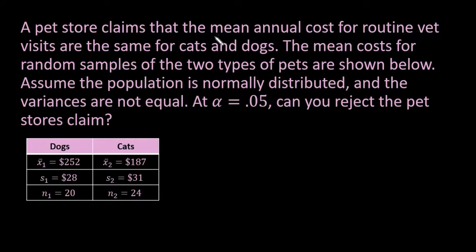A pet store claims that the mean annual cost for routine vet visits are the same for cats and dogs. The mean costs for random samples of the two types of pets are shown in a table. The sample mean for dogs is $252 (x-bar one), the sample standard deviation for dogs is $28, and the sample size is 20. For cats, the mean annual cost was $187 with a sample standard deviation of $31 and a sample size of 24.